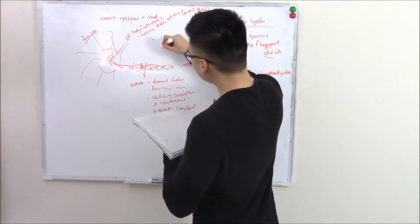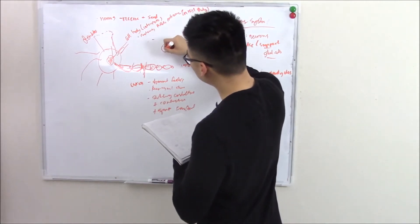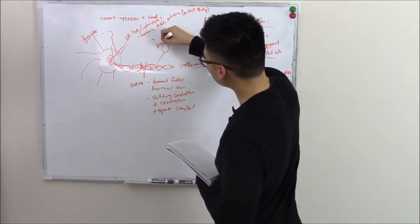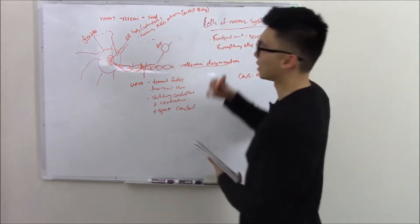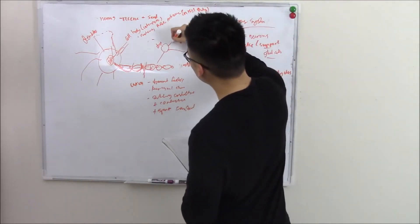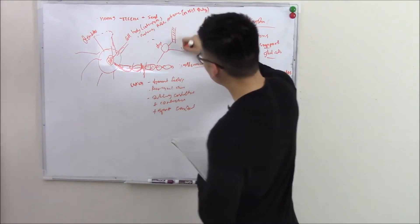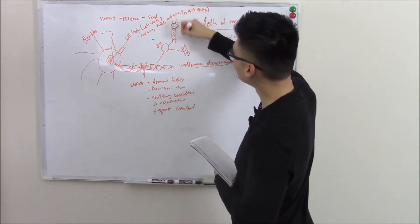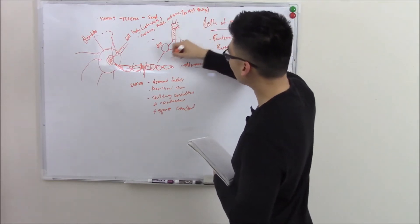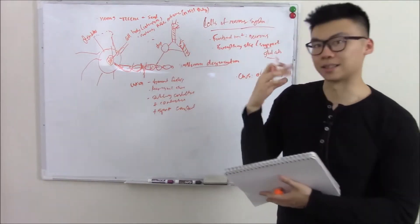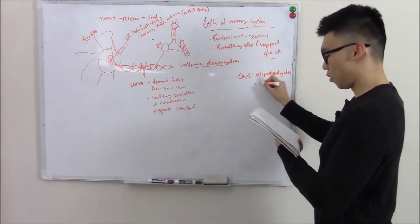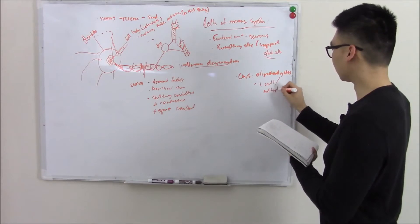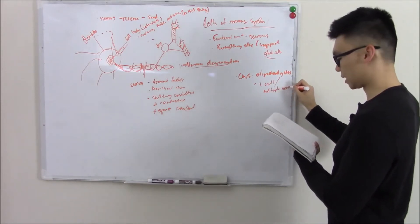And you should know that one oligodendrocyte is great at multitasking, so it can actually work on multiple neurons at the same time and make multiple myelin sheaths at the same time. That's pretty cool. So I'll just write: one cell, multiple neurons - great at multitasking.